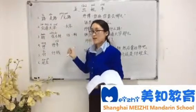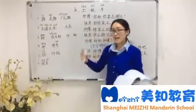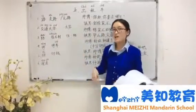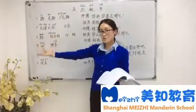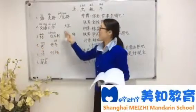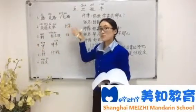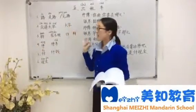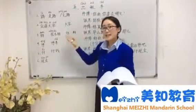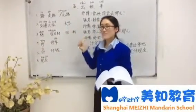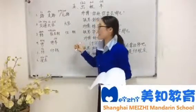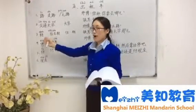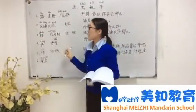Next: 交通大学. 交通大学在我们学校的右边. You can say 什么什么大学 — for example, 复旦大学, 上海大学. Next word: 转, meaning turn.